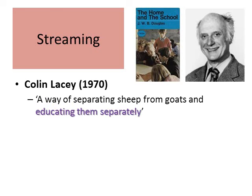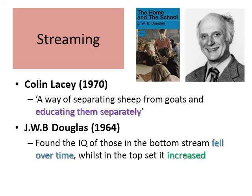Colin Lacey described streaming as 'a way of separating sheep from goats and educating them separately.' Douglass found that the IQ of those in the bottom stream actually fell over time, whilst in the top stream it increased. An IQ test is supposed to measure innate intelligence — the intelligence you are born with. What is interesting is that once a student is streamed, their IQ appears to change based on whether they have been placed in the top or bottom stream.